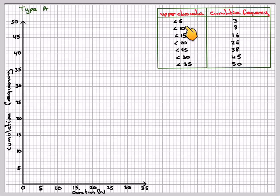Then what we need to do is plot 5 against 3, 10 against 8, 15 against 16, 20 against 26, 25 against 38, 30 against 45, and then 35 against 50. Now, for the graph, you can either do straight lines, but most people tend to do a smooth curve.